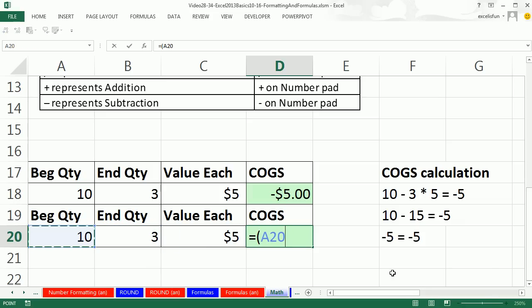we're going to take beginning minus ending inventory. That's how much we had on the shelf at the end of the period. So we sold 7 times the $5 value for each one. That means the cost of goods sold is $35. We sold 7 of them at 5.